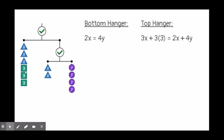When I look at this top hanger, I have three x's and three threes, which is 3x plus 3 times 3, equal to what I have on the right-hand side, which is two x's and four y's. So I've set up this equation to represent the entire mobile.